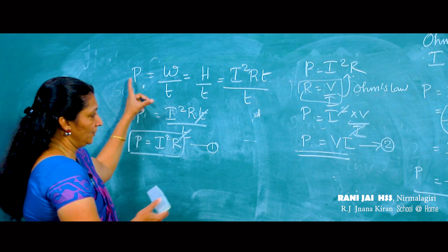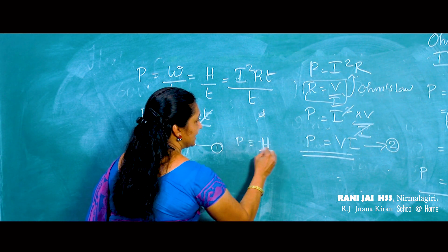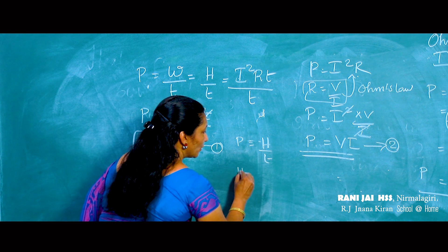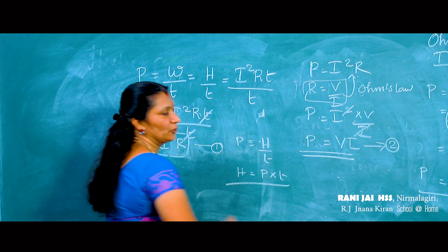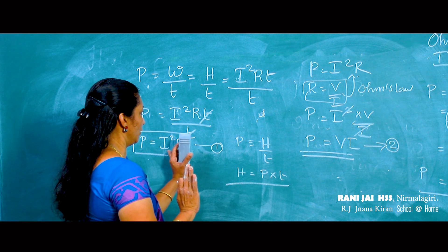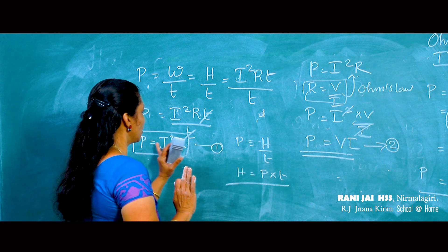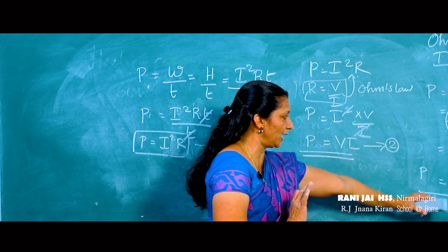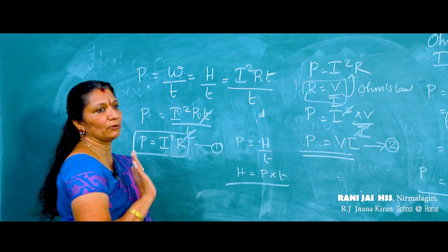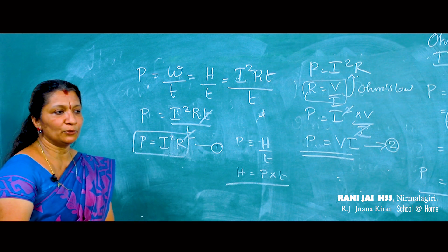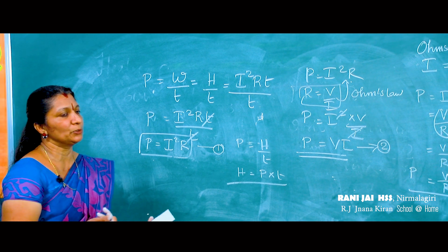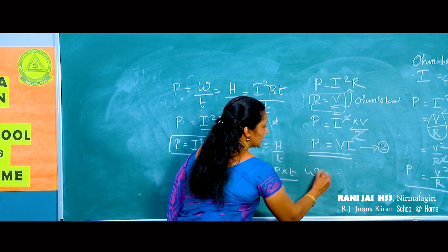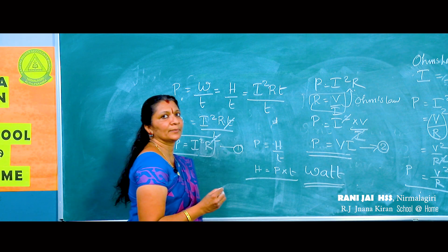So we have the following formulas to calculate power: P equals I²R; P equals H by T — from which H equals P into T; P equals V into I; and P equals V² by R. Write all these formulas in your notebook. Finally, the unit of power is watt.